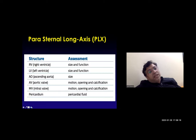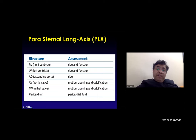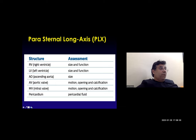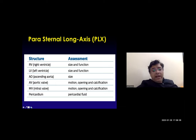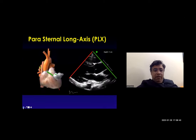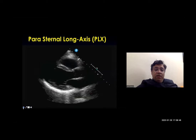In the parasternal long axis view you can assess right ventricular size and function, left ventricular size and function, ascending aorta size and aortic valve motion — including whether it is opening and any calcification. You can see mitral valve motion, opening, and calcification. You can also comment on the pericardium, whether any pericardial fluid is present or not.